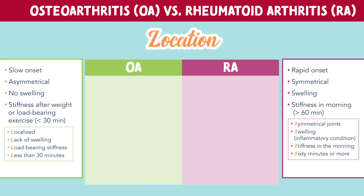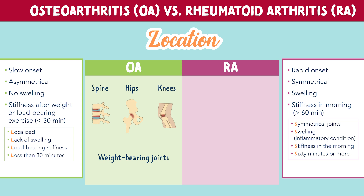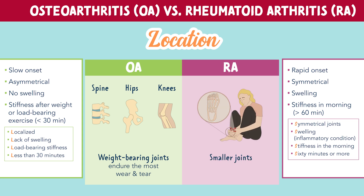Now let's talk about location, or where these types of arthritis appear. OA is most often seen in the weight-bearing joints, like the spine, the hips, and the knees — think, these joints endure the most wear and tear in our bodies. Where RA can affect any joint, but it's most common in the smaller joints, such as those in the hands and feet.